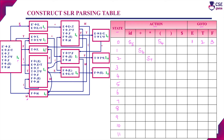State I4 transitions: with non-terminal E goes to I8 — enter 8 in go-to; with non-terminal T goes to I2 — enter 2 in go-to; with non-terminal F goes to I3 — enter 3 in go-to. For terminals: with open bracket goes to I4, enter S4; with ID goes to I5, enter S5. I4 state is complete. State I5 contains only a final item.